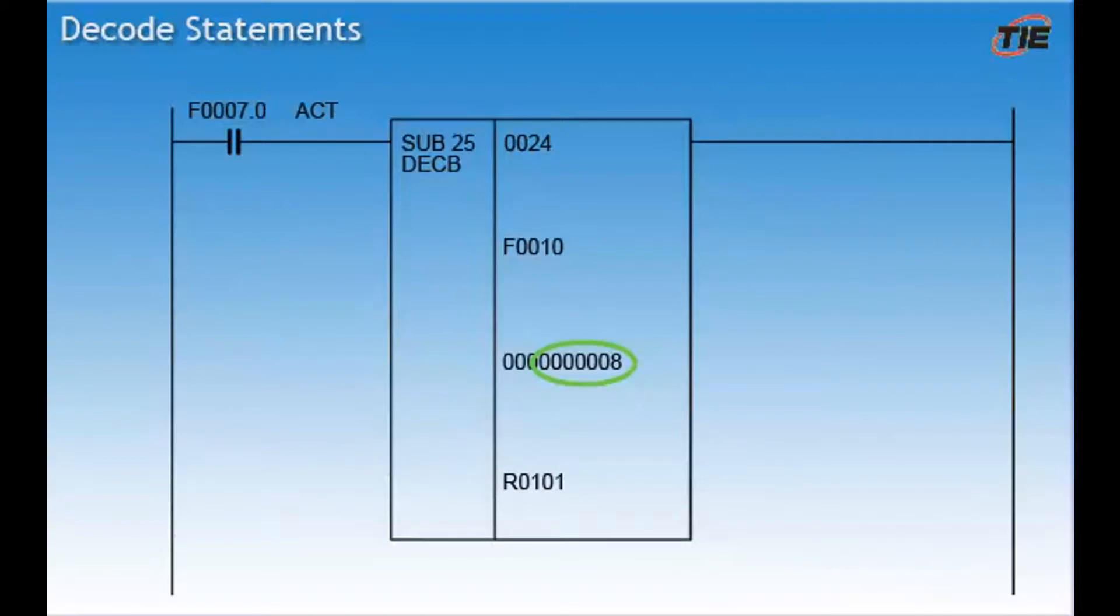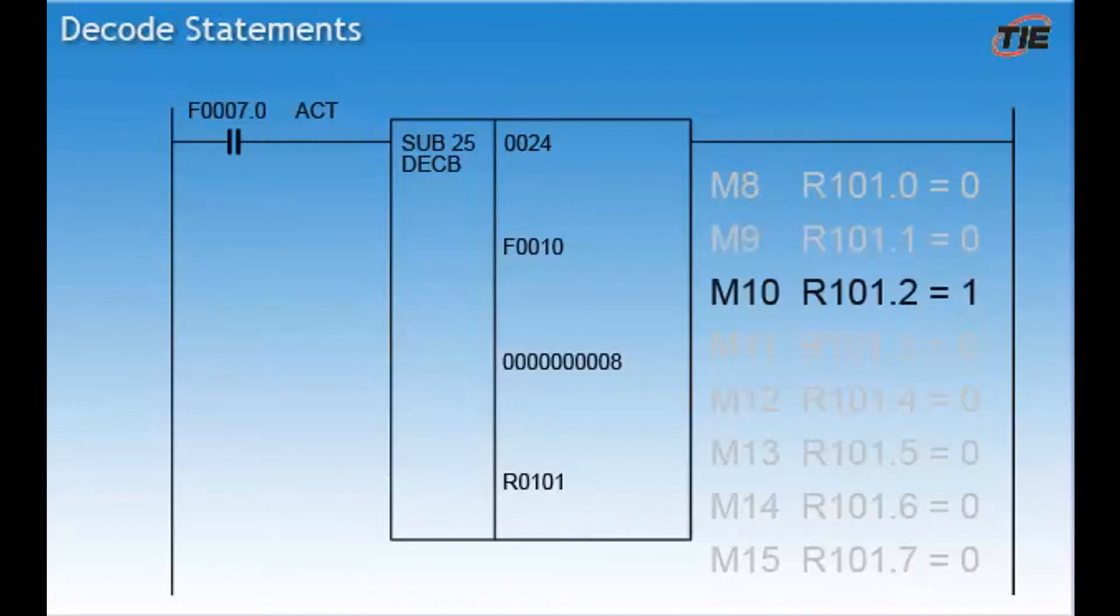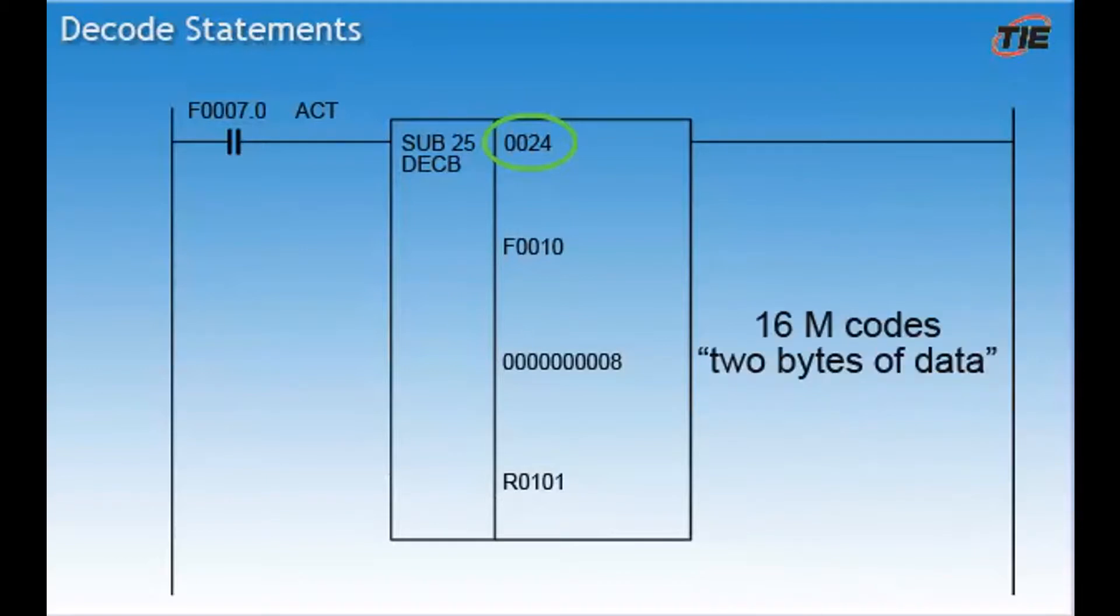Here is an example. The starting address for the M code statement is M8. A call of M8 will turn on R101 bit 0. A call of M9 turns on bit 1, M10 turns on bit 2, and so on. In the example used earlier, you will see that this number is set to a 2. This means that this decode statement handles 16 M codes. The starting address is 8, so this decode statement will handle M8 through M23.